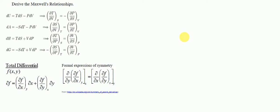The question is to derive Maxwell's relationships. For example, if we have du = TdS - PdV, one of the relationships is dT/dV at constant S is equal to negative dP/dS at constant V, where T is the temperature, V is the volume, S is the entropy, and P is the pressure.